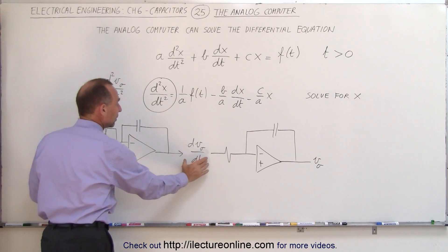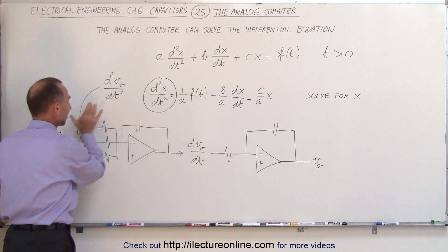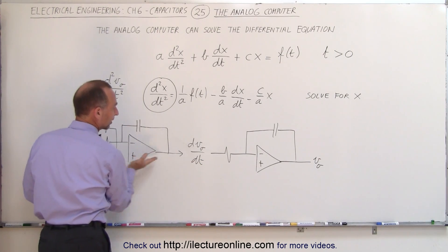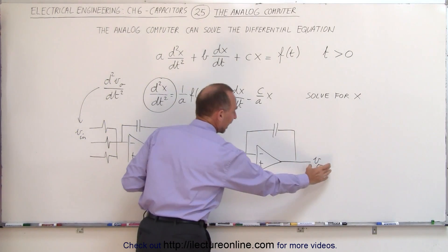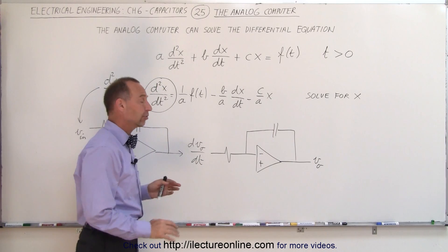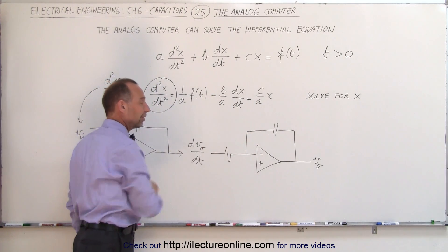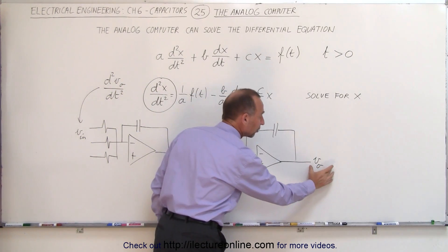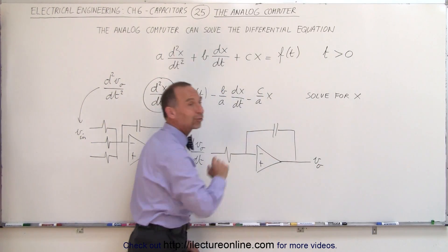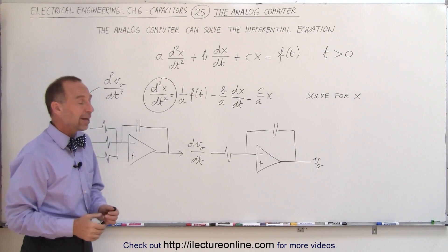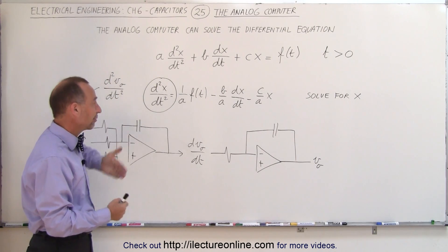When we integrate that, the output is then going to be the first derivative instead of the second derivative of the output voltage. That feeds into a second integrator and that gives us the v_output. But as long as we find the right sizes of the capacitors and the right size of the resistors, we should be able to then come out with a solution to the actual differential equation, which is the v_output, which is what we're solving this equation for x.